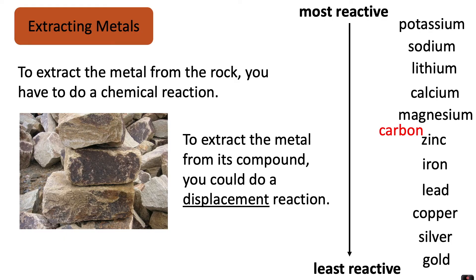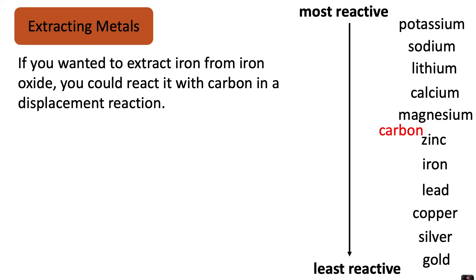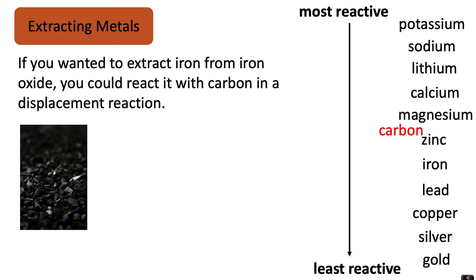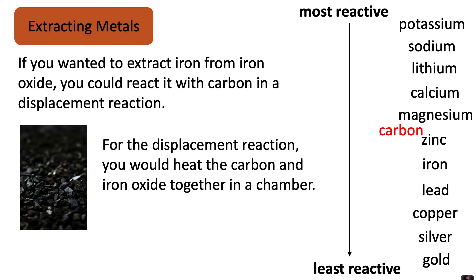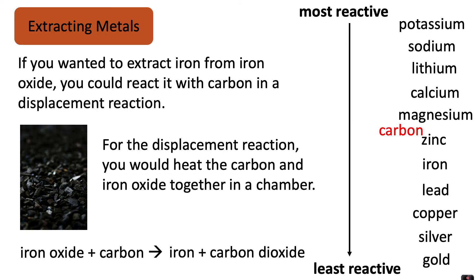If you wanted to extract iron from iron oxide, you could react it with carbon in a displacement reaction. You would heat the carbon and iron oxide together in a chamber, and because carbon is more reactive than iron it will displace the iron. The products would be iron plus carbon dioxide.